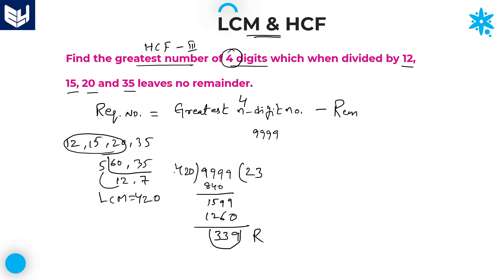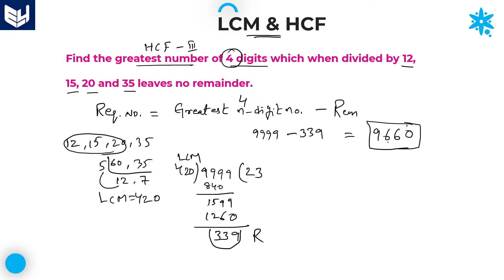339 is the remainder obtained by dividing the greatest four-digit number with the LCM. So subtract the remainder: 9999 minus 339. Units place: 9 minus 9 = 0; 9 minus 3 = 6; 9 minus 3 = 6; 9 remains 9. The answer is 9660. That is the greatest four-digit number exactly divisible by 12, 15, 20, and 35.